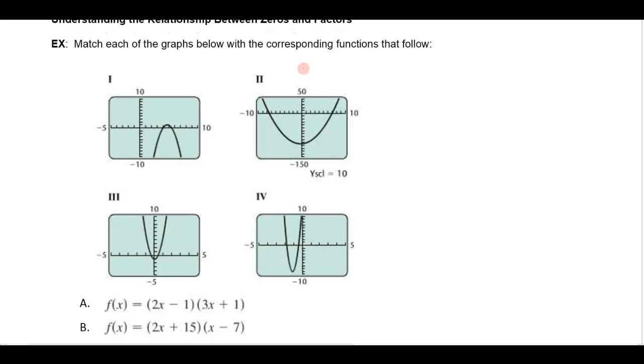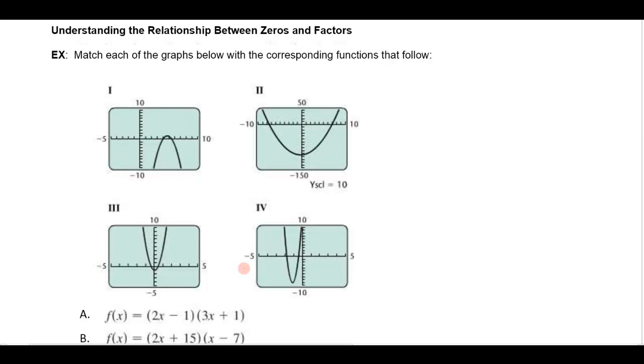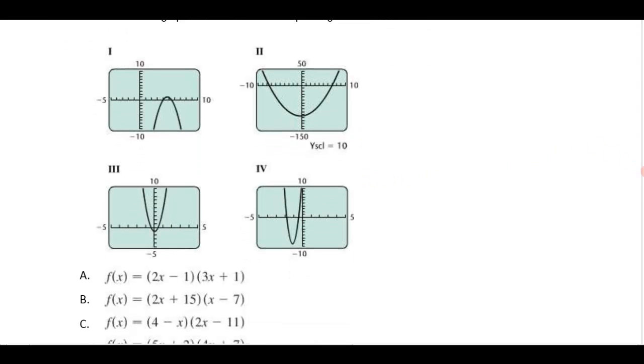The relationship that you want to see between the zeros and the factors is that if this has a zero of one, two, three, four, then you would expect that x minus four, something around that, would be a factor.